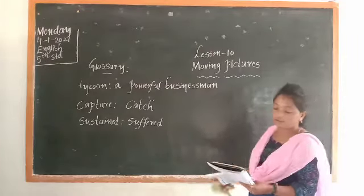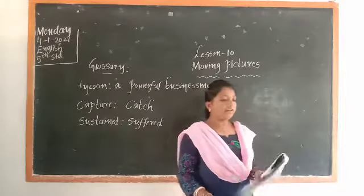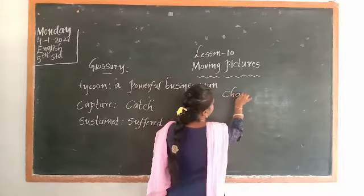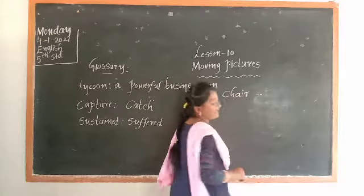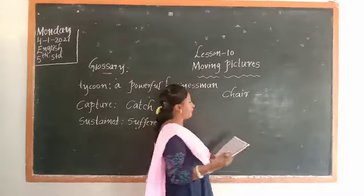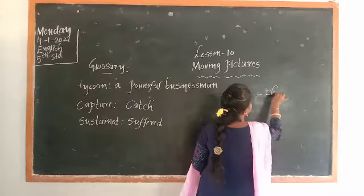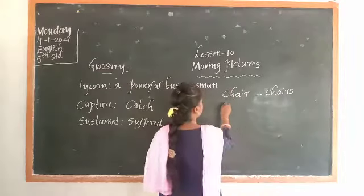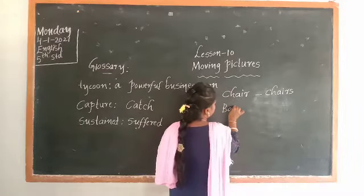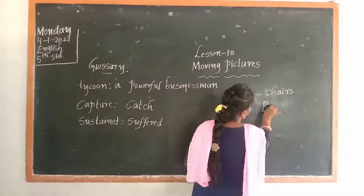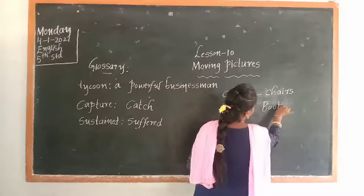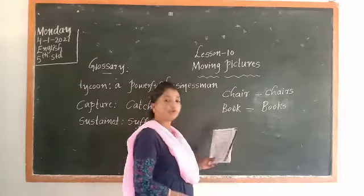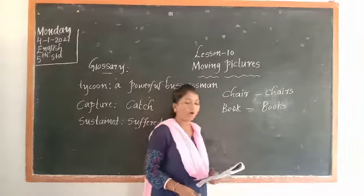Next, you have to list out the items in your home and form the plurals. For example, in the home we can see a chair — 'chair' is singular, the plural form is 'chairs.' Another example: 'book' is singular, the plural form is 'books.' You have to write this list in your English notebook. That is today's homework.